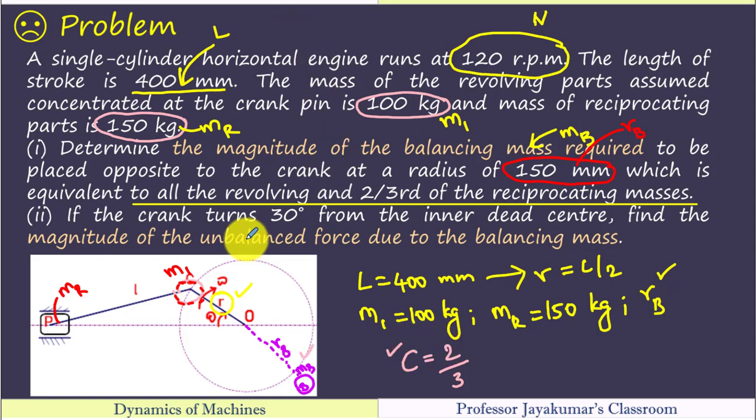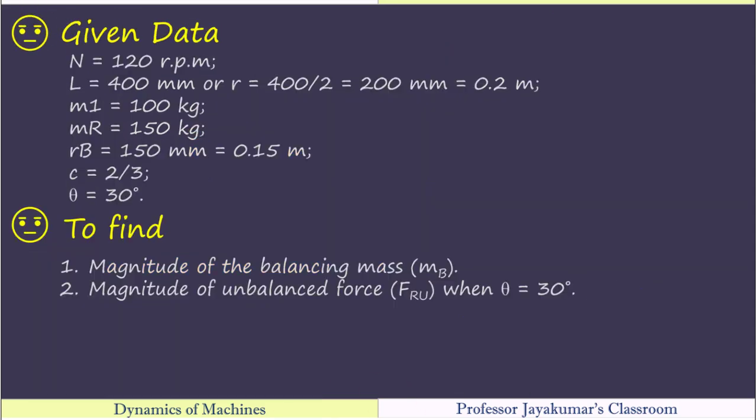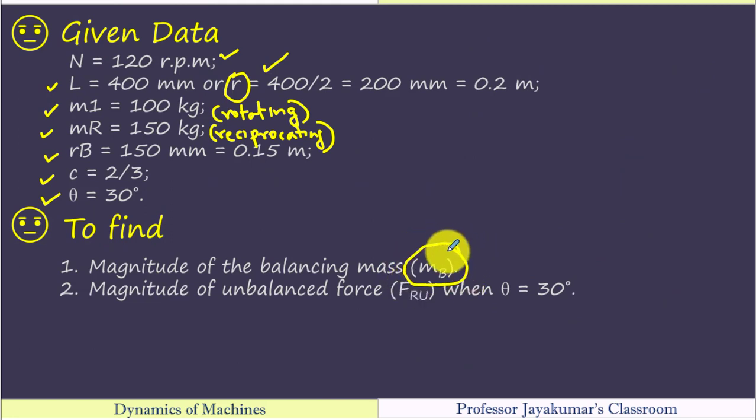Then question number two is, if the crank turns 30 degree from the IDC, that means when theta is equal to 30 degree, find the magnitude of unbalanced force. So these are the given data. We need to find magnitude of balancing mass and magnitude of unbalanced force.